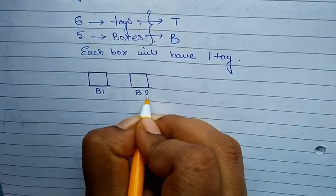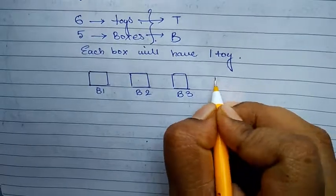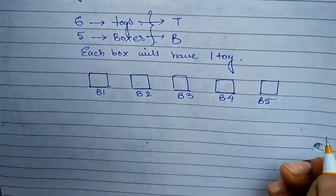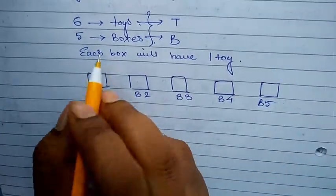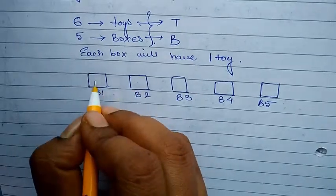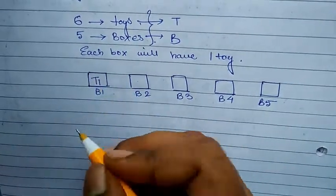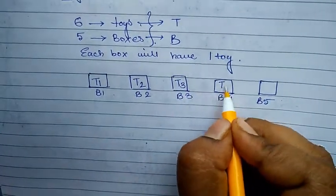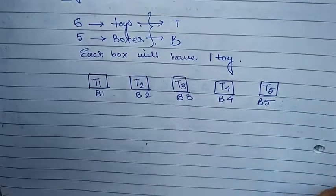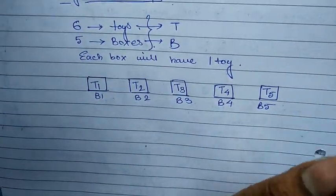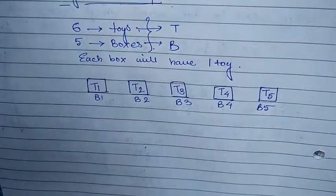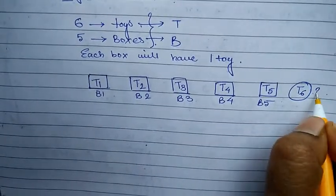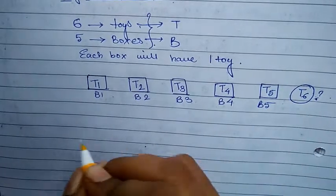So I have to keep it in that fashion. I have six toys and five boxes. Let me draw the boxes — let me name the boxes B and toys T. So this will be B1, B2, B3, B4, and B5. I have five boxes and six toys. Let me place the first toy: T1 in the first box, T2 in the second box, T3 in the third box, T4 in the fourth box, T5 in the fifth box. So five of my toys are kept properly in each of the boxes.